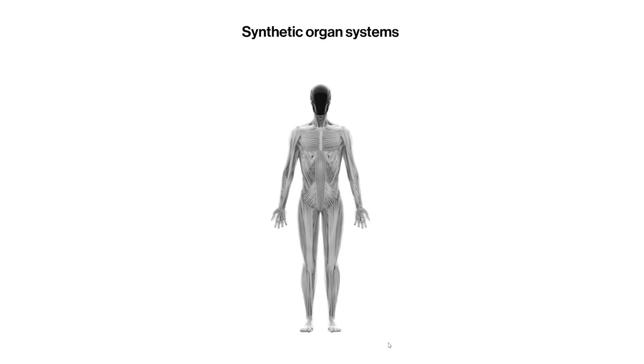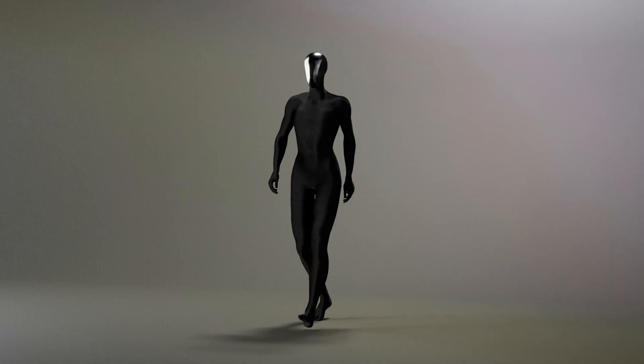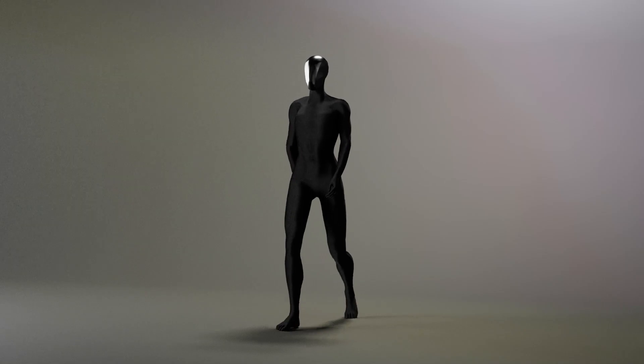For instance, the robot has a polymer skeleton that mimics the 206 bones in the human body, complete with articulated joints and artificial ligaments. These features give it an incredible range of motion.